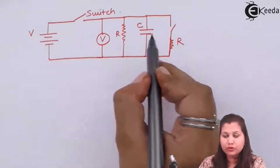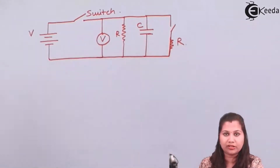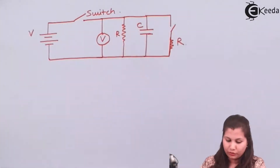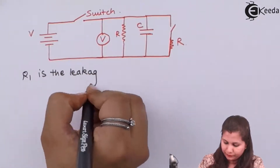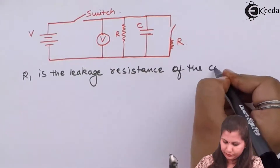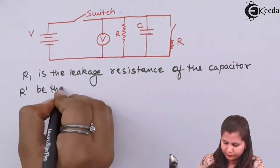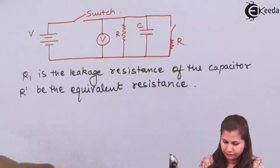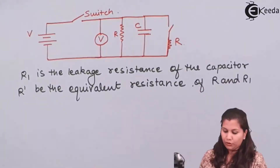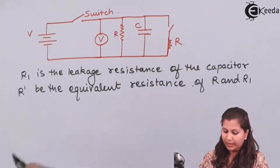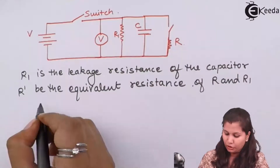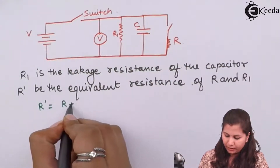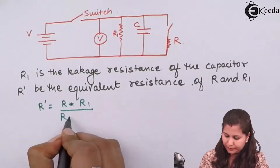Here we have two resistances: R1 is the leakage resistance of the capacitor, and R' is the equivalent resistance of R and R1. Since R and R1 are connected in parallel with each other, R' equals R times R1 divided by R plus R1. That is the equivalent resistance.